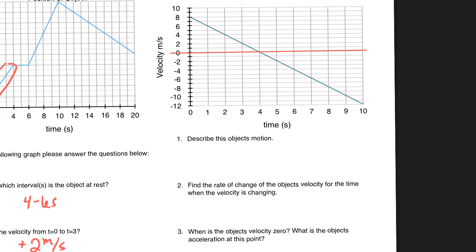Question two specifically tests whether you know the definition of acceleration by asking for the rate of change of the object's velocity. I could ask the same question by just saying: what's the acceleration of the object? Either way, you're looking for the slope, which is negative two meters per second squared. It's just finding slope — rise over run. If you need to show some work, show some work. You don't get bonus points for not showing your work.